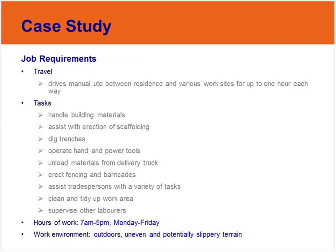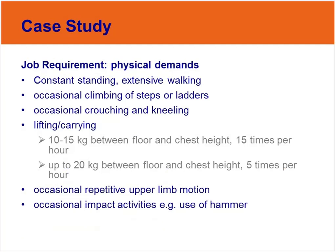Now that we've evaluated the nature of Alex's injury and current physical tolerances, let's assess the job requirements. Alex drives a manual ute between home and various work sites, taking about one hour each way. Alex performs a range of building construction tasks and supervision of other labourers on a full-time basis Monday to Friday. The work environment is primarily outdoors and involves working on uneven and potentially slippery surfaces. In consultation with Alex and reviewing the task analysis provided by the employer, the physical demands include constant standing and extensive walking, occasional climbing of steps or ladders, occasional crouching and kneeling, significant lifting between floor and chest height, some occasional repetitive upper limb motion, and occasional impact activities such as use of a hammer.